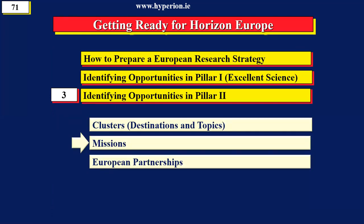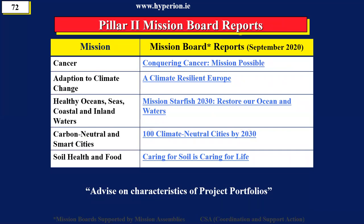In Pillar 2, there are something called missions — a new concept in Horizon Europe. The commission is running an experiment looking at large challenges, for example cancer, climate change, healthy oceans and rivers, smart cities, clean soil, and healthy food. They set up boards supported by mission assemblies, and in September 2020 the boards produced documents called mission board reports. The commission is using these to identify research topics in the program. If any of those areas are relevant to you, you can find those reports on the course website. In module five you'll see these are a very valuable source of ideas about who wrote the topic and how they feed into the work program.